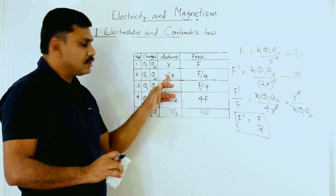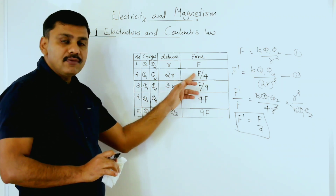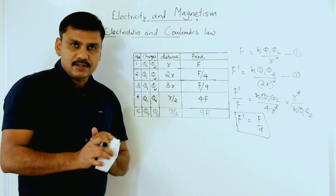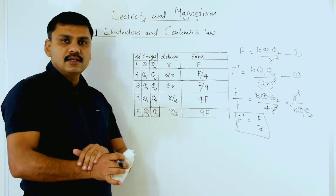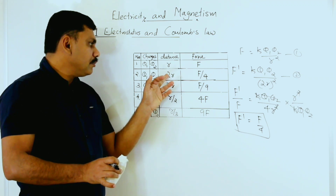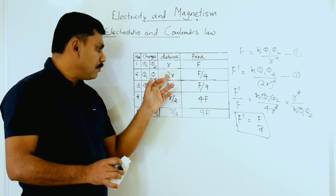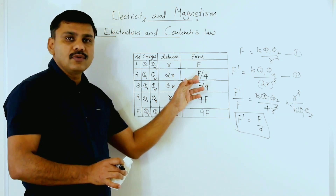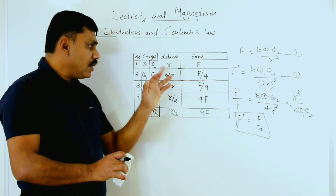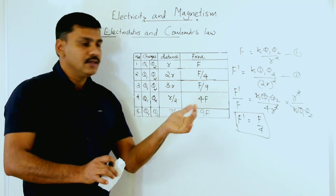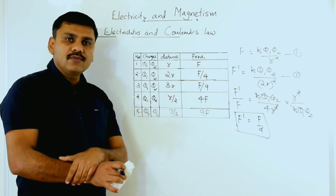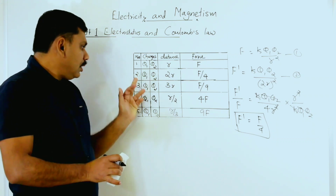So when the distance is increased by two times, the force becomes one-fourth of the previous value. As you know, when the distance increases the force is reduced. Here the distance is doubled so the force becomes F/4. The force will never increase when you increase the distance — it will decrease. In this second case the new force is one-fourth of the previous value.